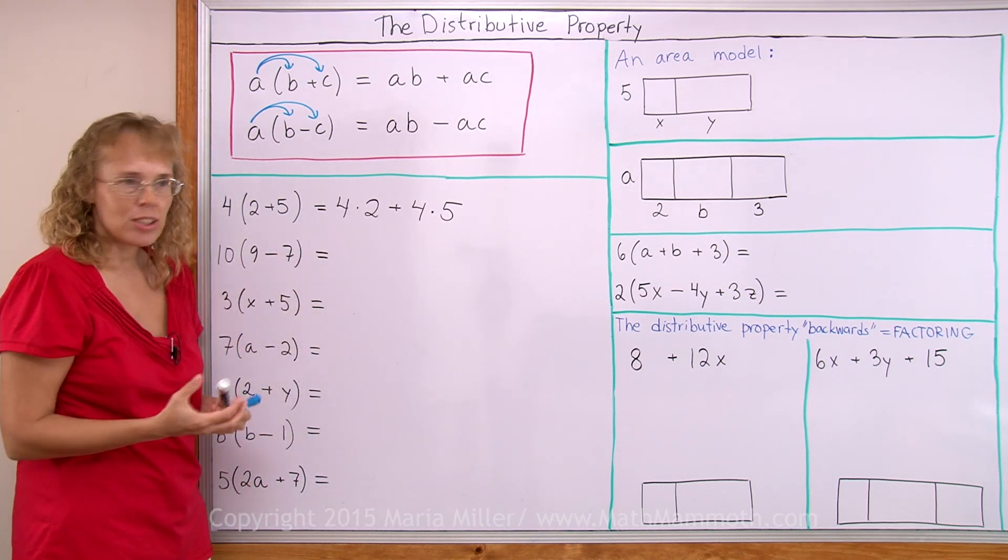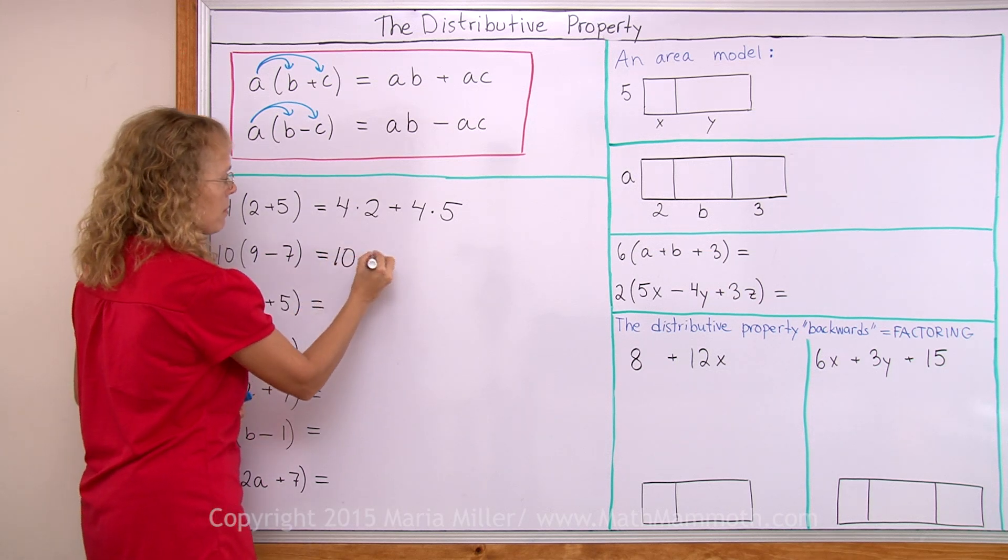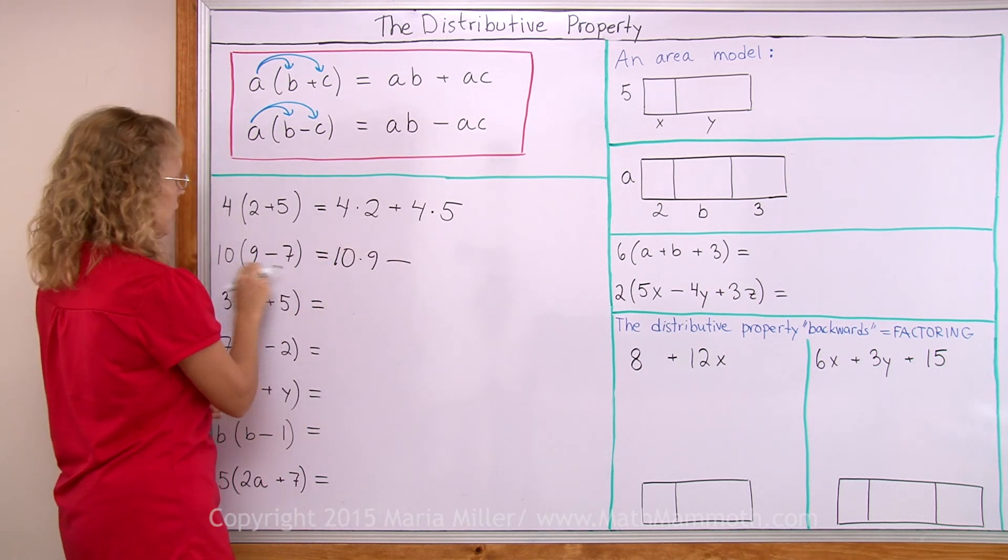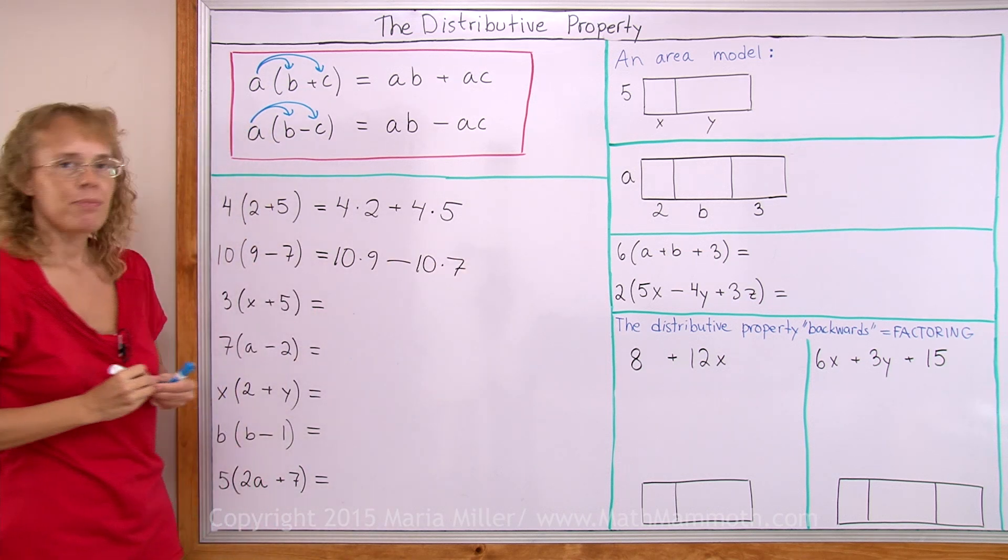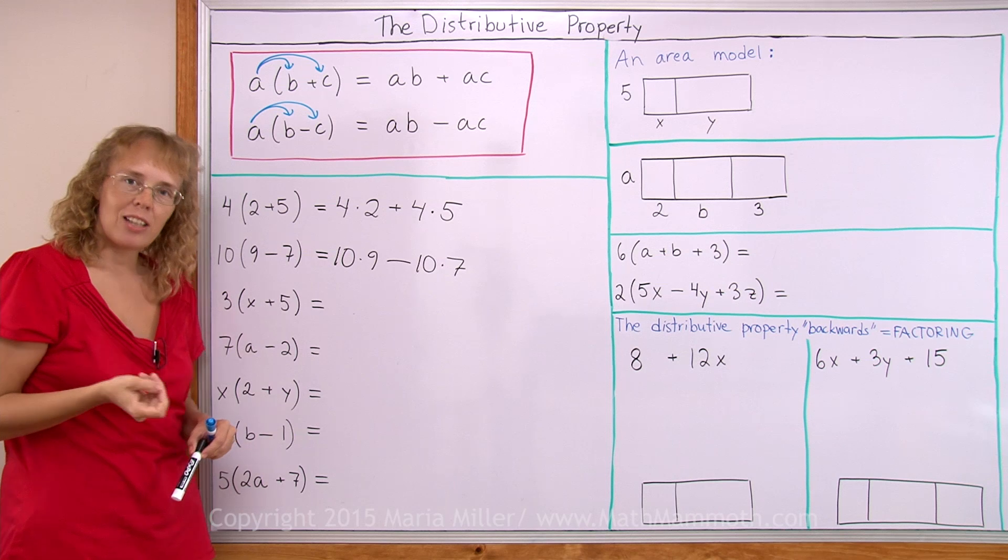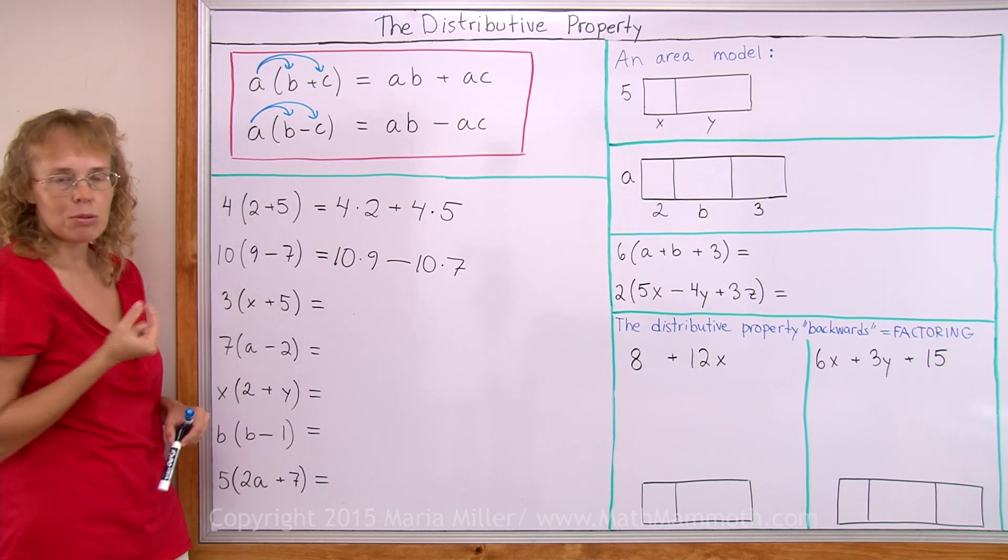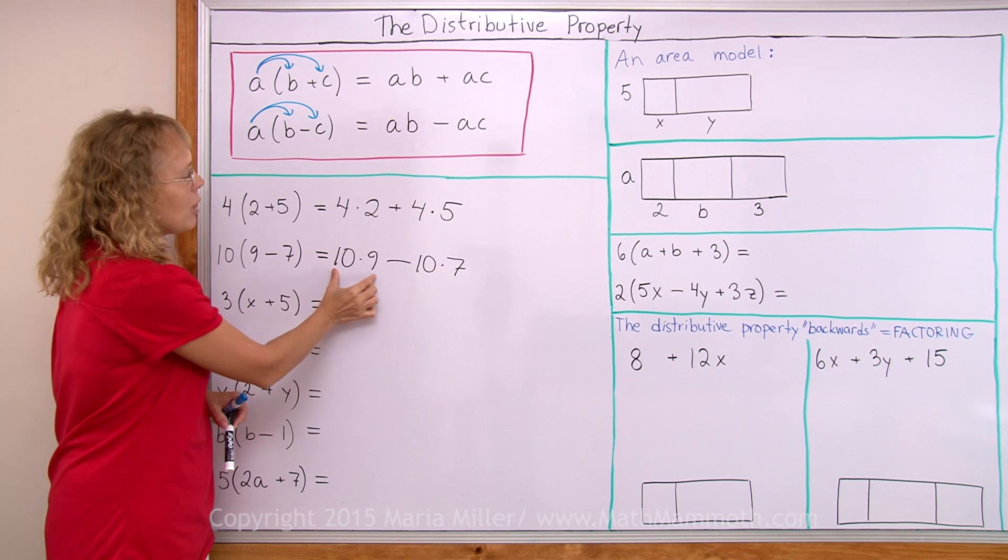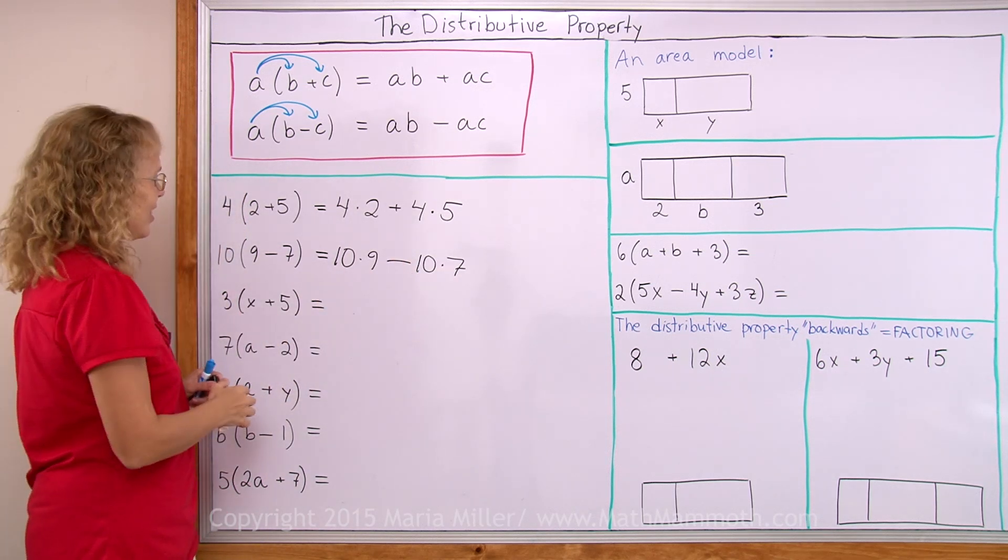And if you use it with subtraction, then this is the same as 10 times 9 minus 10 times 7. Again it happens that it is easier to use this form to actually calculate. 9 minus 7 is 2 and 2 times 10 is 20. Here you would have 90 minus 70 equals 20.